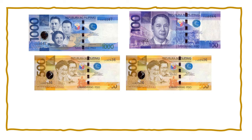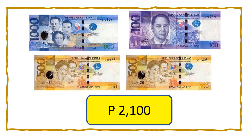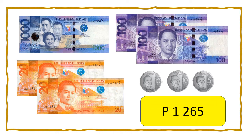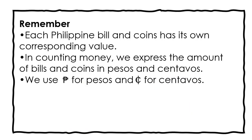If you have 1 one-thousand-peso bill, 2 five-hundred-peso bills, and 1 one-hundred-peso bill, how much do we get? We have 2,100 pesos. We need to remember that each Philippine bill and coin has its own corresponding value. In counting money, we express the amount of bills and coins in pesos and centavos. We use the peso sign for pesos and the centavo sign for centavos.